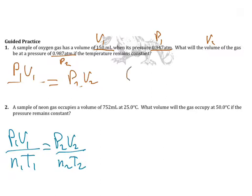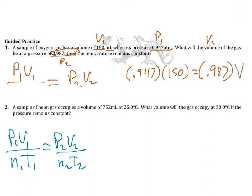We plug in: P1 is 0.947, V1 is 150. Before plugging in P2, notice that pressure is increasing. If pressure goes up, what must the volume be doing? Think about whether volume is increasing or decreasing — this lets you anticipate the answer and catch errors on an exam. P2 is 0.987, and V2 is what we're solving for.